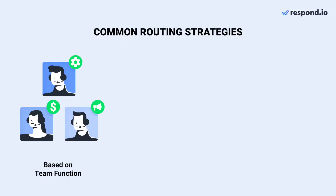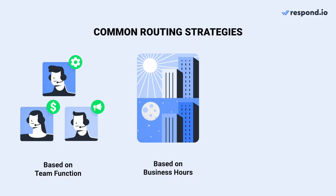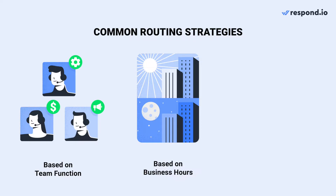1. Route to teams with specific functions such as sales, support, finance, and so on. 2. Routing based on business hours for companies with more than one shift. 3. Language-based routing ensures contacts get support in their preferred language. Remember, you can use these strategies individually or together to create a simpler or more complex routing workflow depending on your business needs.